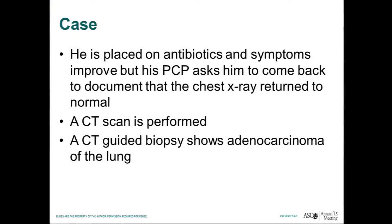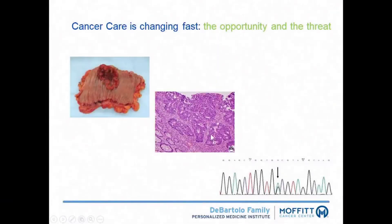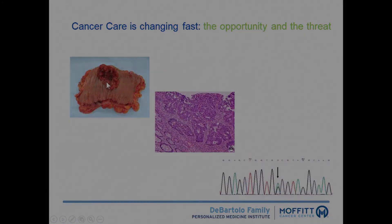Adenocarcinoma of the lung, which is the most common type of lung cancer. Or maybe it has glandular formation under a hematoxylin-eosin stain. So it's an adenocarcinoma of the colon.